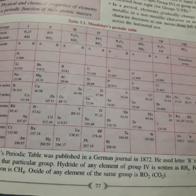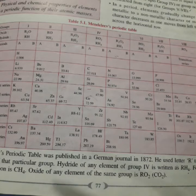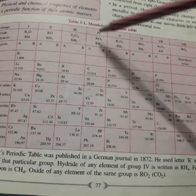And second point, all the elements of a subgroup or of group 8th, group 8th has no subgroup, have similar properties and show the same valency, which is equal to the group number up to group 4th.